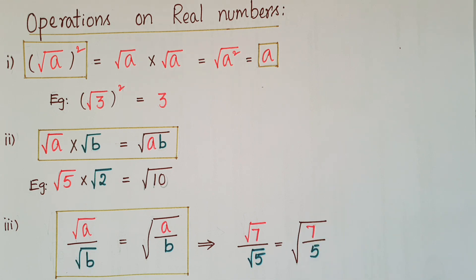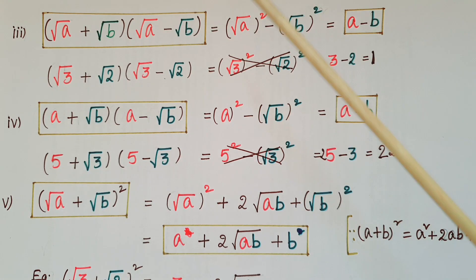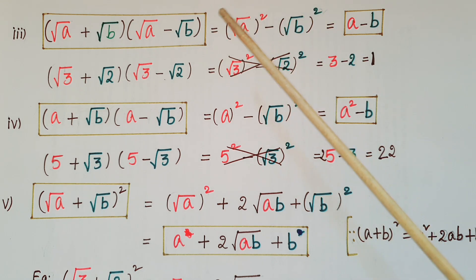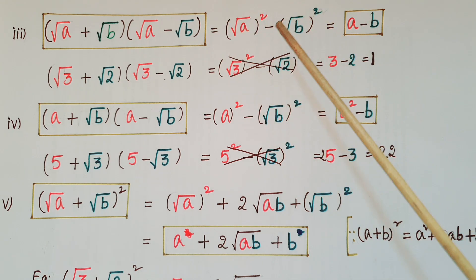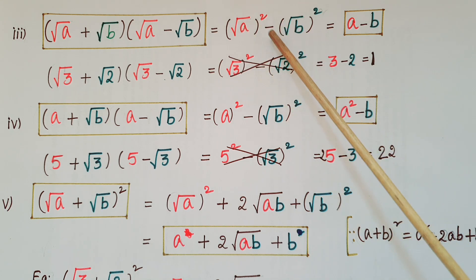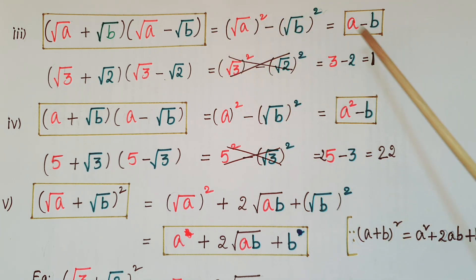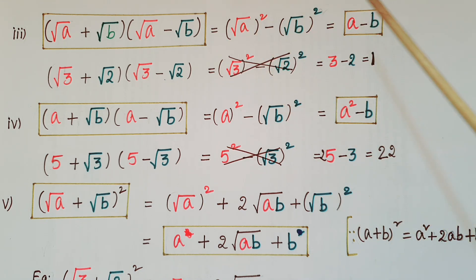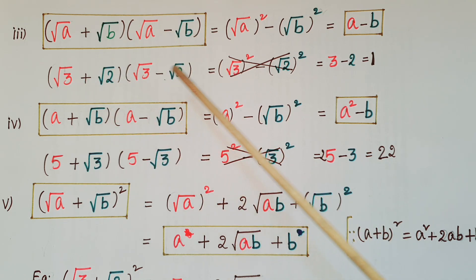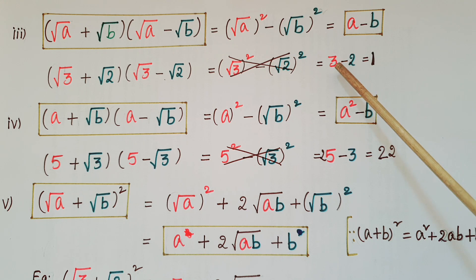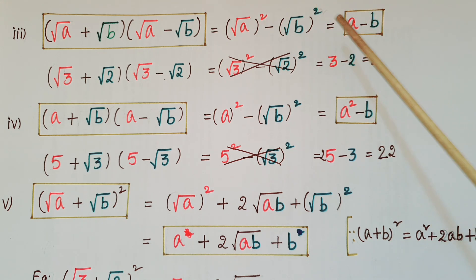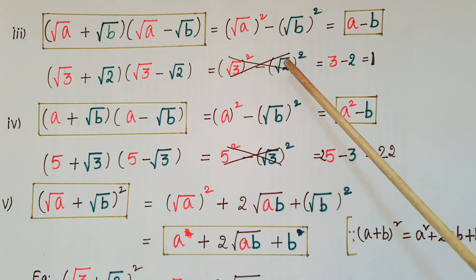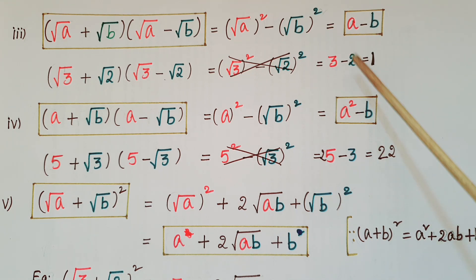The next one: (root a + root b)(root a − root b) is in the form of (a + b)(a − b). We know that (a + b)(a − b) = a² − b². Here a is root a, so root a whole square, and b is root b, so root b whole square. That gives root a whole square minus root b whole square, which is a − b. So (root 3 + root 2)(root 3 − root 2) = 3 − 2 = 1. Alternatively, root 3 whole square minus root 2 whole square gives the same result.